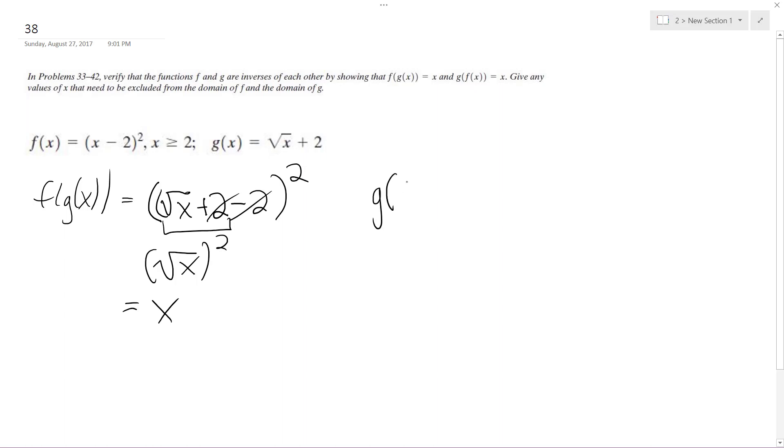How about g of f of x? I get square root of x minus 2 squared, plus 2. So square root cancels out the squared term. So I get x minus 2, plus 2. And these cancel out, so I get x out.